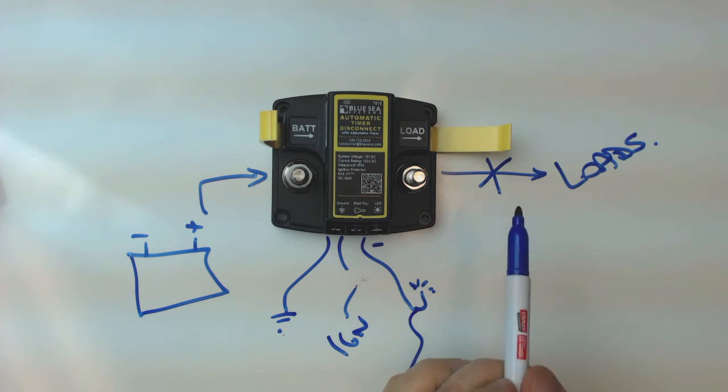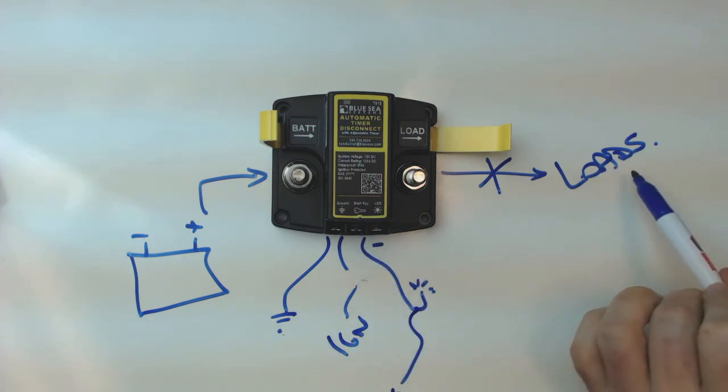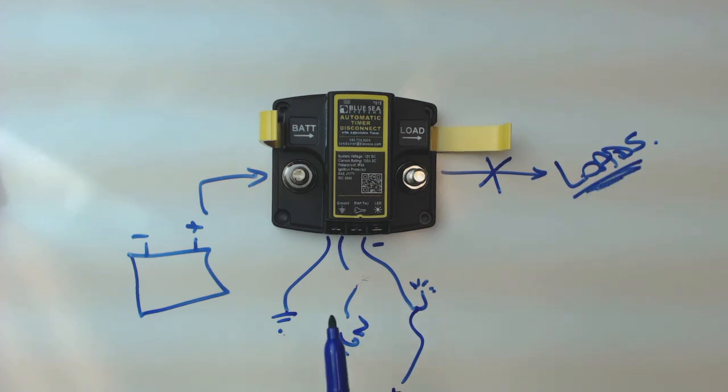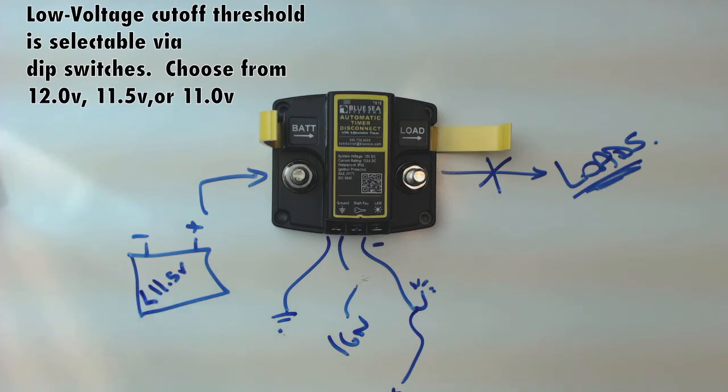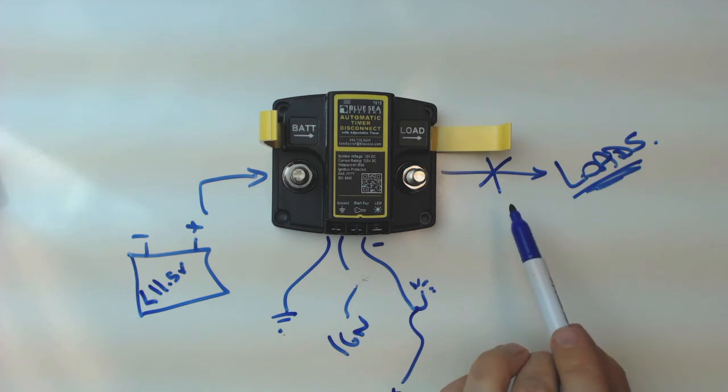So for example, if you had the timer set for four hours, but you were drawing 50 amps, your loads were drawing 50 amps, then you're going to deplete your battery's charge long before the four hours is up. Maybe you're 20 to 30 minutes in and then the voltage drops below 11.5. If it's less than 11.5, then the timer will say, well, I haven't reached four hours yet, but the battery is below 11.5. So I'm going to open up the solenoid and cut power to the loads anyway.